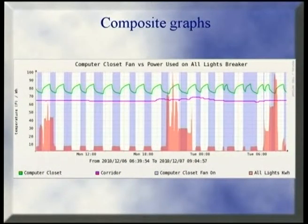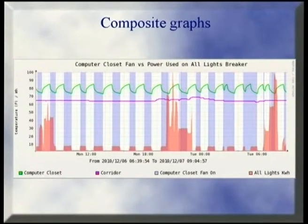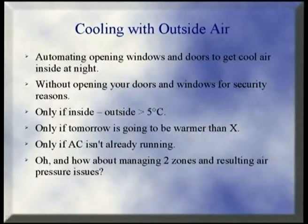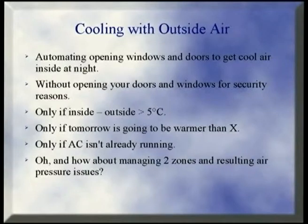Another example composite graph with Cacti showing power use — I was wondering which circuit my fan was on. I tried all of them and eventually found it was on the lights circuit. I can see it's using about 5 to 7 watts every time it turns on. Part of the talk was about saving money — in California we have temperature issues for about 4 to 5 months out of the year, and AC costs a lot of money.